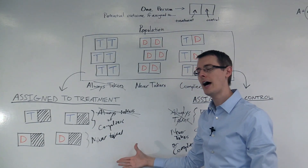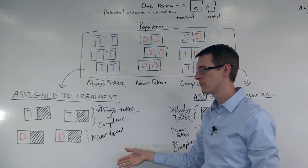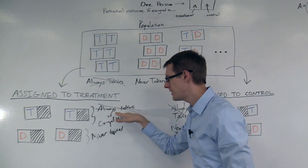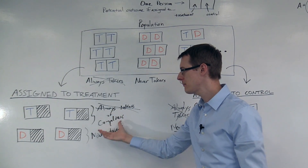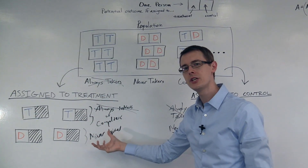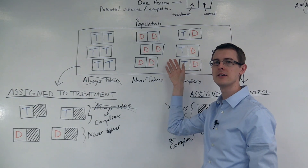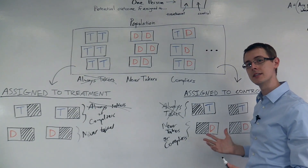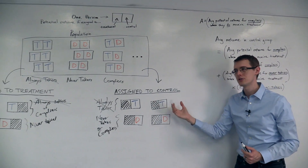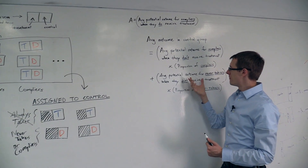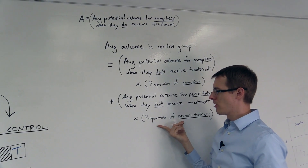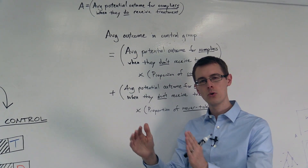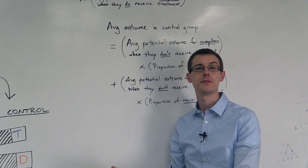We just look at what percentage of people assigned to the treatment group are actually getting treatment. That's the percentage of compliers in the data, assuming there are no always-takers. And it's really important that this is a random sample, so that percentage reflects the true proportion of compliers in our population — and also reflects the proportion of compliers in the control group, because of random assignment. Similarly, we also know the proportion of never-takers, because if we only have compliers and never-takers, knowing one gives us the other.